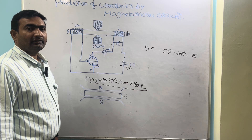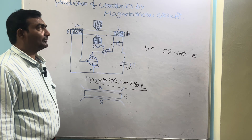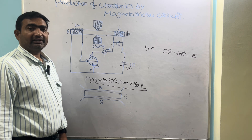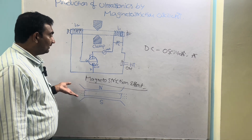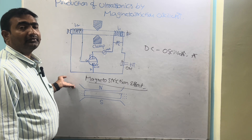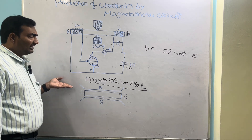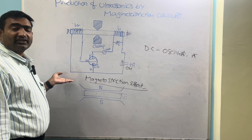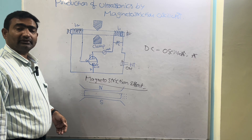Welcome to a session on production of ultrasonic waves by using magnetostriction oscillator. Here I am going to explain the principle, construction and working of magnetostriction oscillator. The basic principle behind the working of magnetostriction oscillator is the magnetostriction effect.